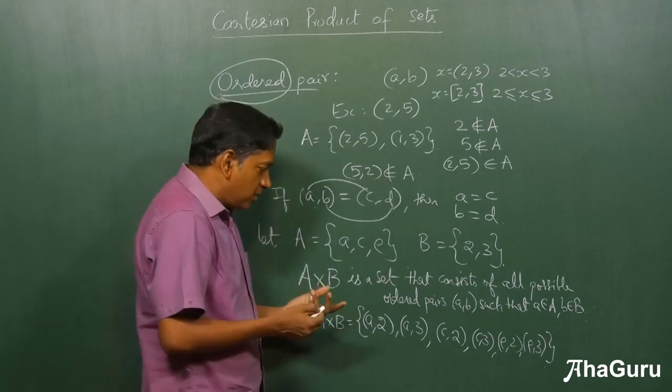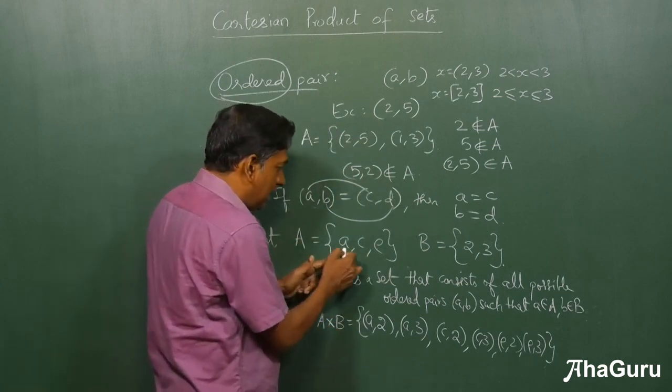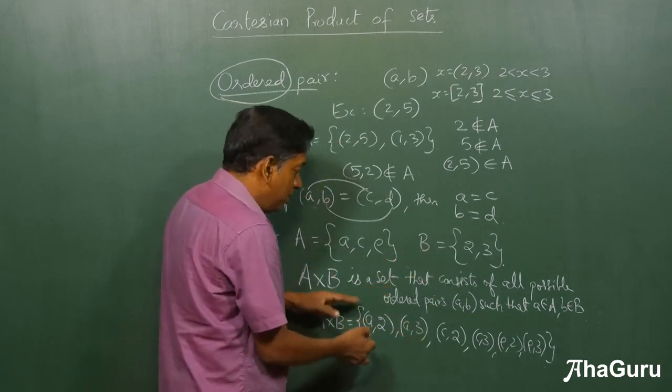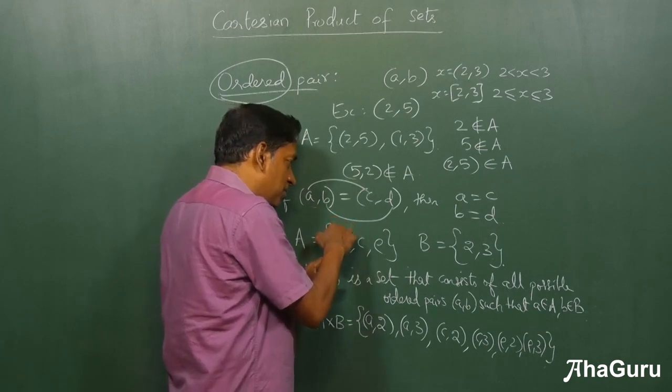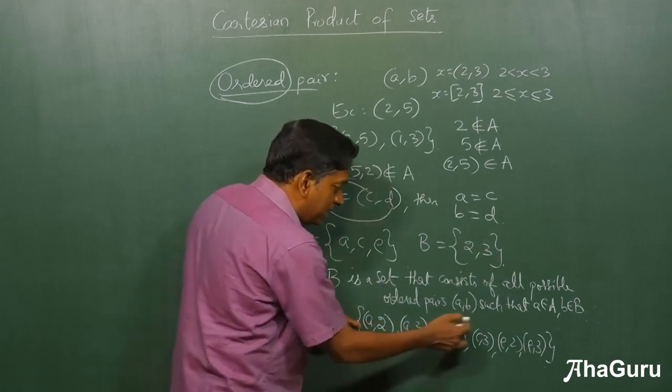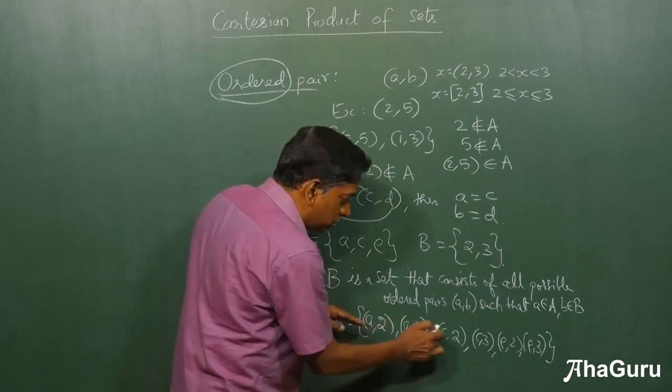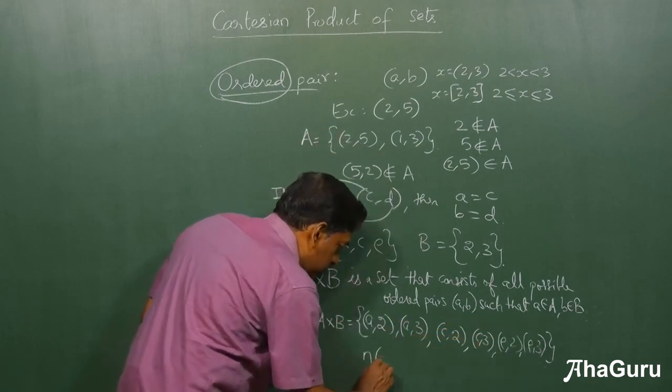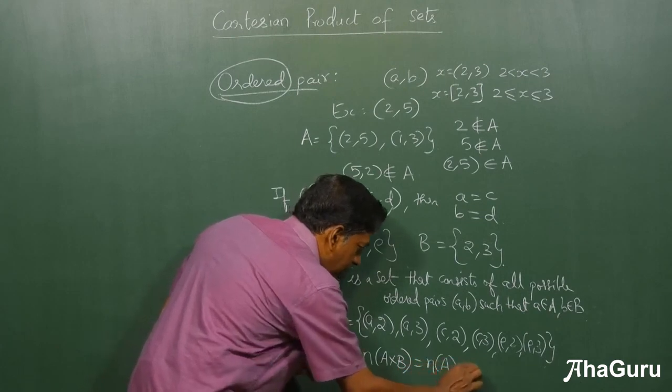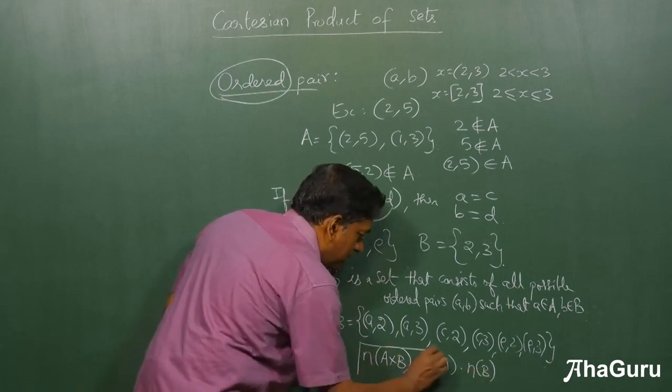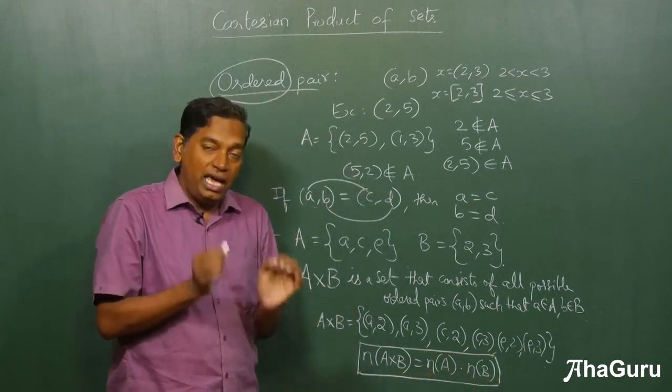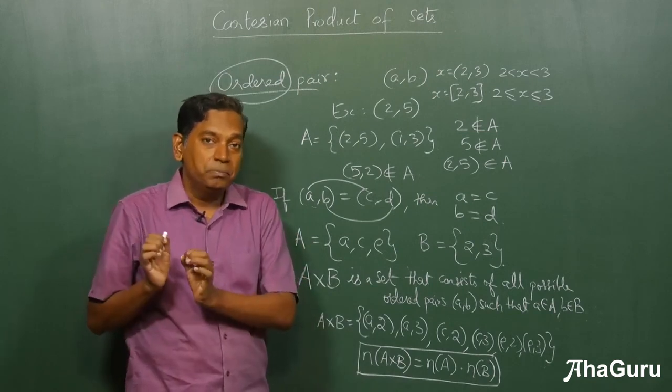It is quite straightforward to see that if A has 3 elements and B has 2 elements, A cross B has 3 times 2. Why? Because for every possible first element here, you can have 2 second elements here. So the total number will be 3 times 2, which is what we are saying, 1, 2, 3, 4, 5, 6. So n(A×B) equals n(A) times n(B). The number of elements in A cross B is the product of the number of elements in A times the number of elements in B.